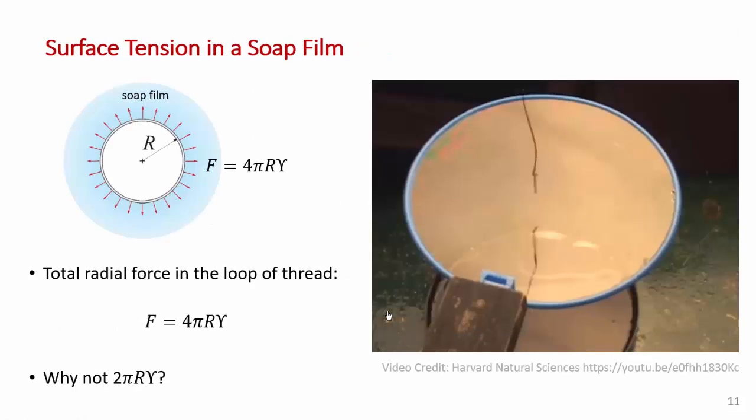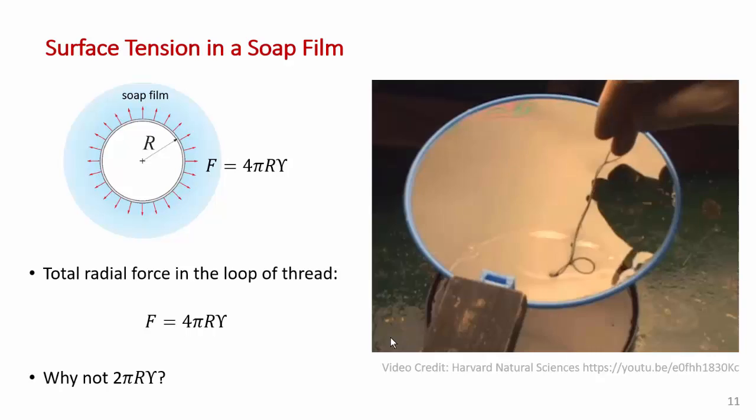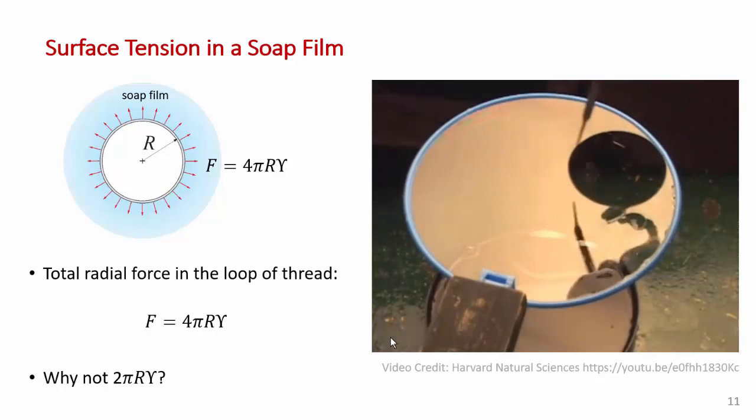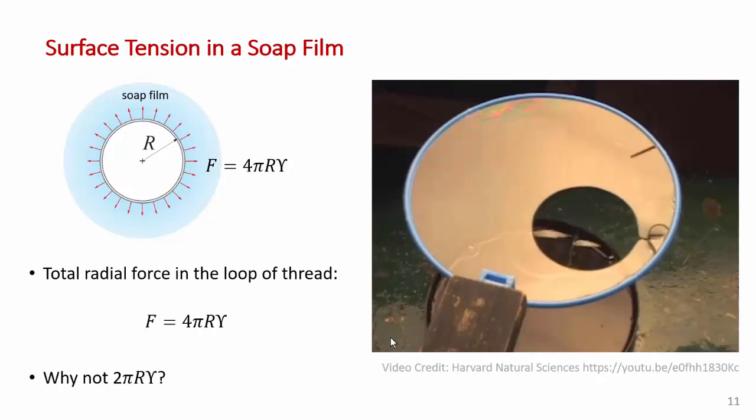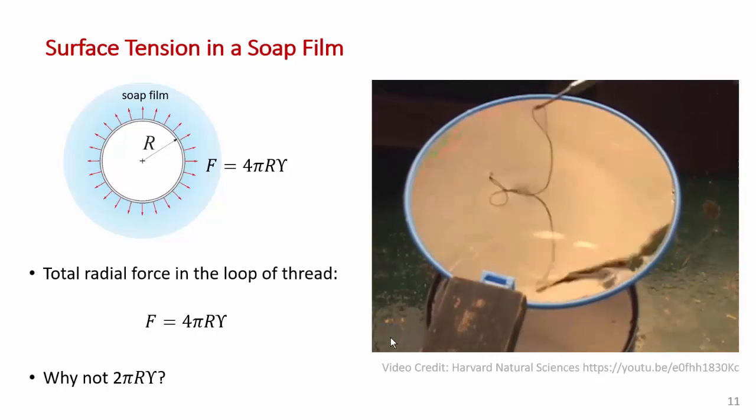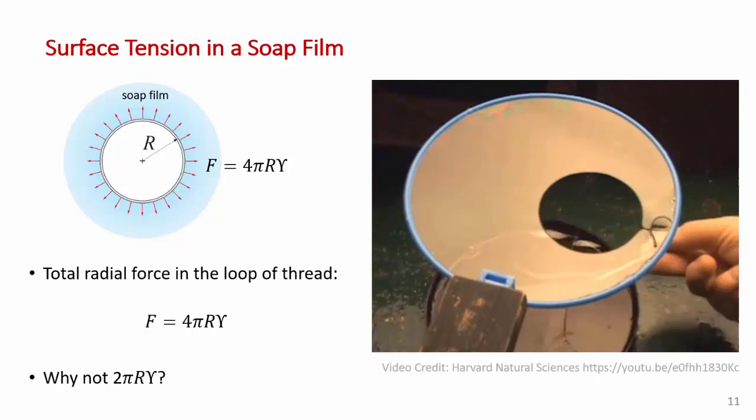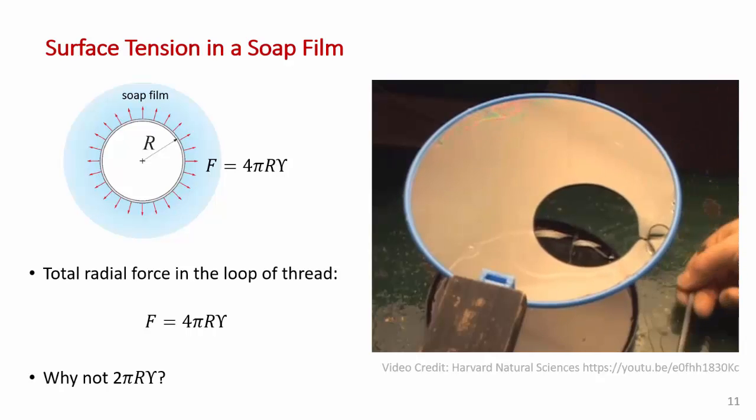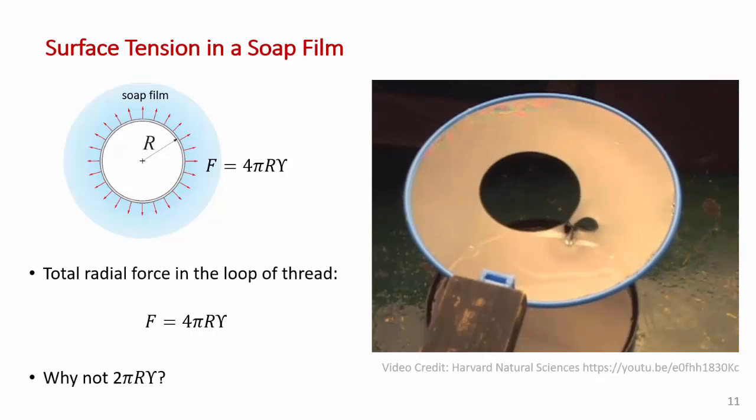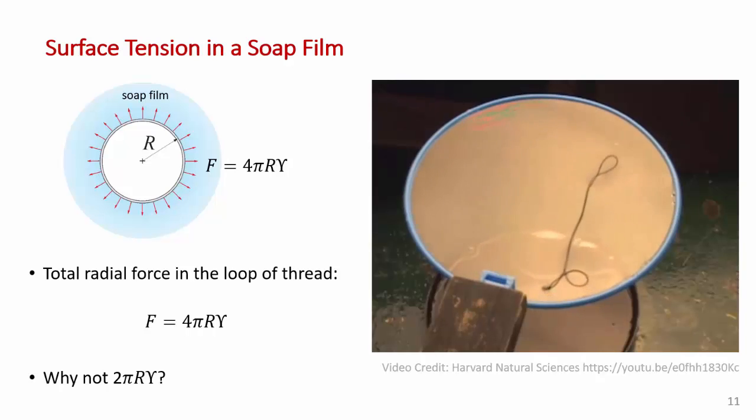Next, we'll consider the surface tension in a flat soap film. What you're seeing here is a flat soap film across a large hoop. So what's happening here is you're seeing a loop of thread placed onto the soap film. And when you poke out the center of the thread, when you poke the film out of the center of the thread, the thread stretches into a nearly perfect circle. Of course, that's a lovely example of the surface tension that acts radially on that loop of thread.